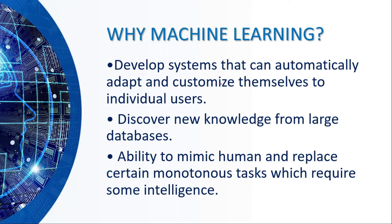Machine learning is basically used to develop systems which can automatically adapt and customize themselves to individual users. For example, in Gmail — if any fraud or unauthorized email is sent to you, it goes directly to the spam folder. There is a machine learning algorithm working behind this which identifies the mail as spam or genuine. Genuine mail is sent to the inbox, while unauthorized mail is sent to spam.